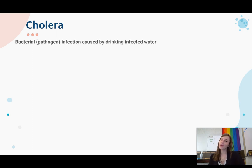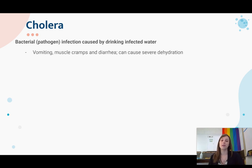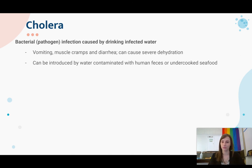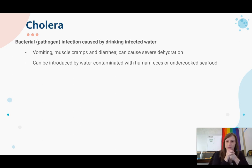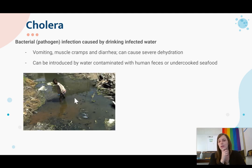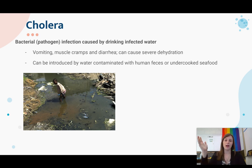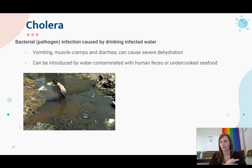Cholera is a bacterial infection caused by drinking infected water. It causes vomiting, muscle cramps, diarrhea, and severe dehydration — people can die from dehydration because they're vomiting and experiencing diarrhea so much they can't retain enough fluids. Cholera can be introduced by water contaminated with human feces or undercooked seafood. When we're talking about developing nations without access to clean drinking water, if human or animal waste is going into areas where people gather or play in the water, this is a source of cholera, which is why it is common in developing nations.